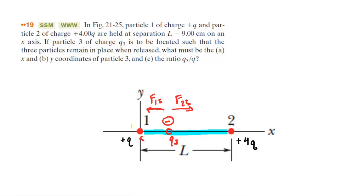Let us call the distance from the origin to Q3 as x. From the diagram, the distance from Q3 to Q2 would be L minus x. We know from our analysis that the force acting between charges one and three is going to equal the magnitude of the force between charges two and three.